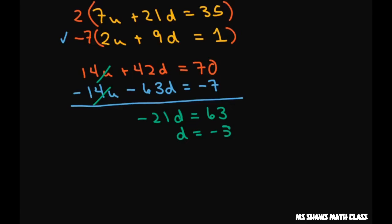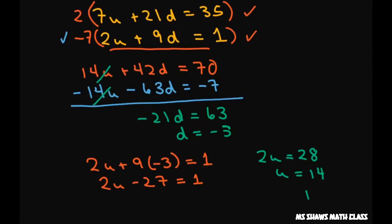Now to get your U, you plug it back in. You can plug it back into either one. So let's do the second one. It looks a little easier. So 2U plus 9 times negative 3 equals 1. So 2U minus 27 equals 1. Add 27 to both sides of the equation. You get 2U equals 28. Divide both sides by 2. So U equals 14. So this would be your first term.